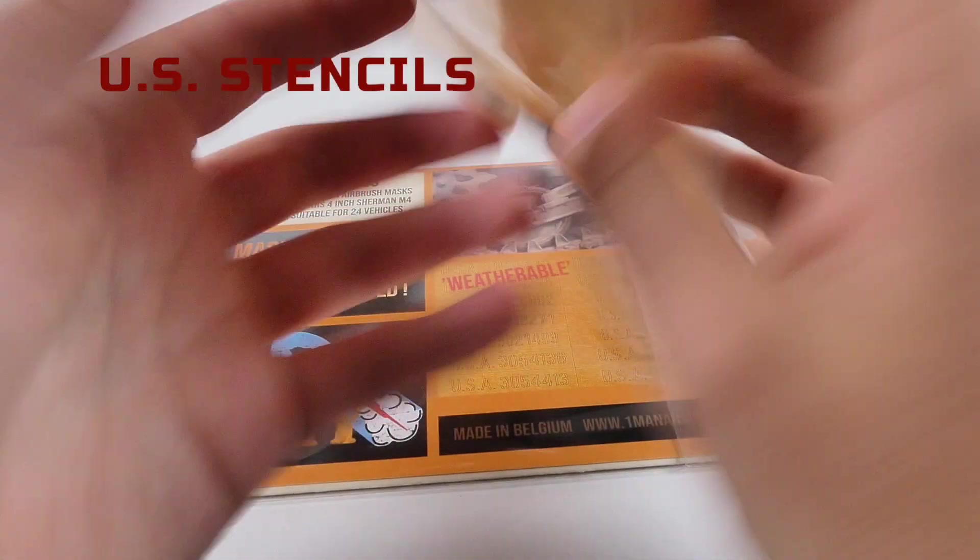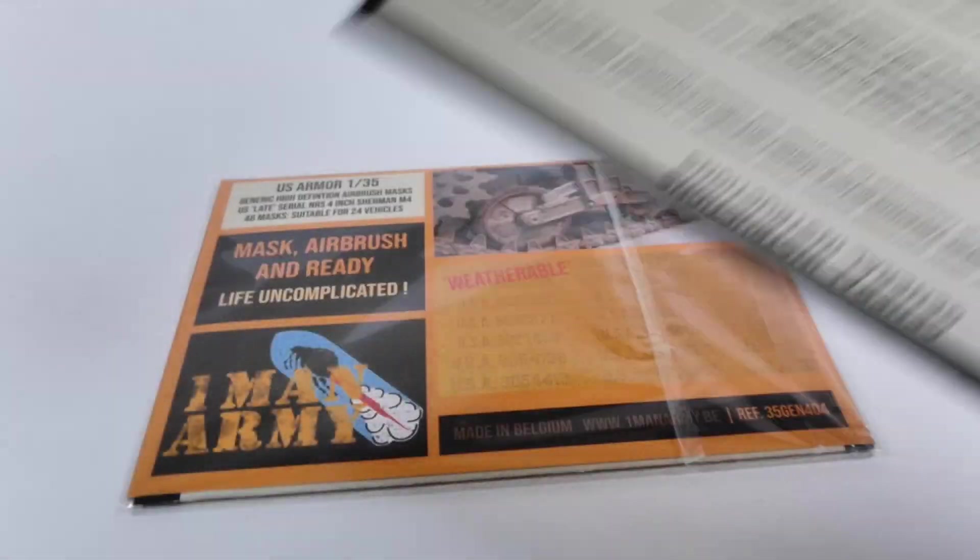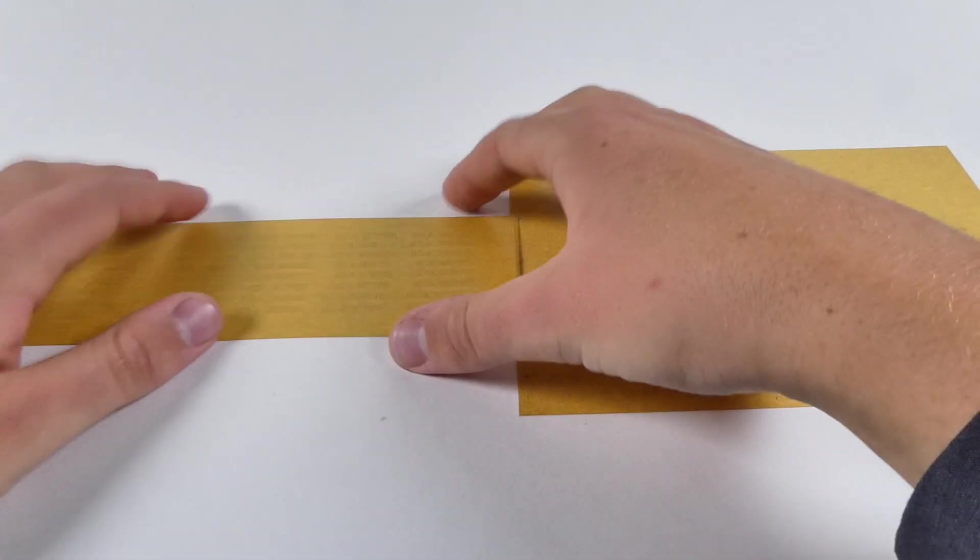As you can see, they're all packaged in a cellophane wrapper with two pieces of glossy card stock that protect the masks, which are the cover and then the instructions for applying the stencils.